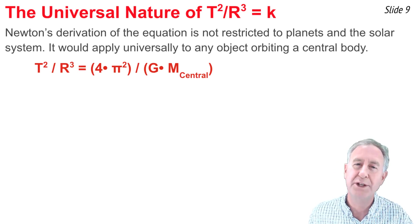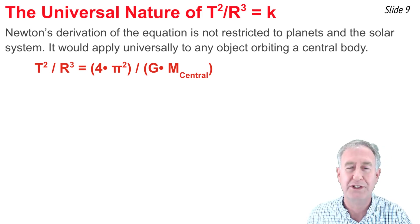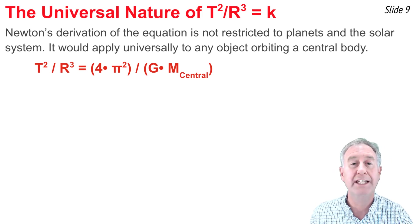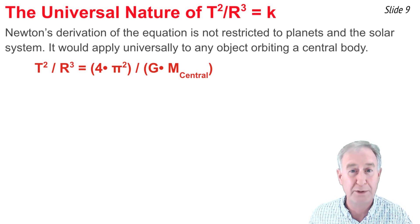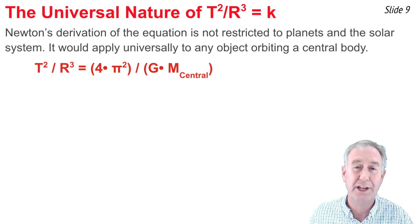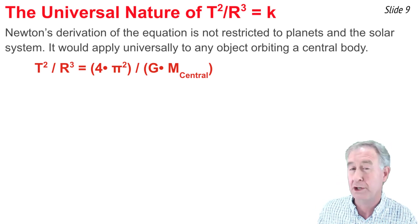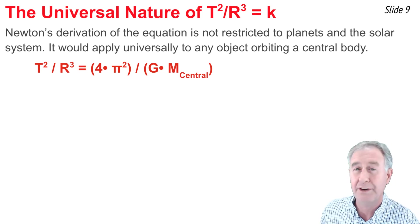In other words, it's not restricted to the planets of our solar system and the Sun, but can be applied to any system of orbiting satellites around some central body. In such cases, the T² / R³ ratio is equal to 4π² divided by G divided by the mass of the central body.